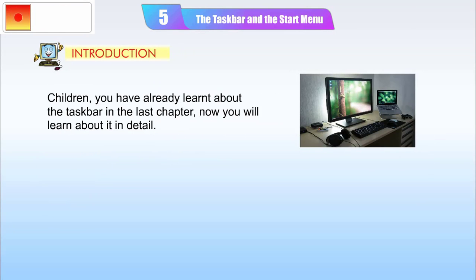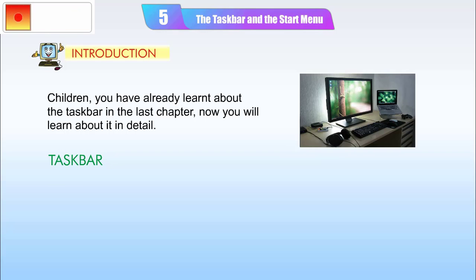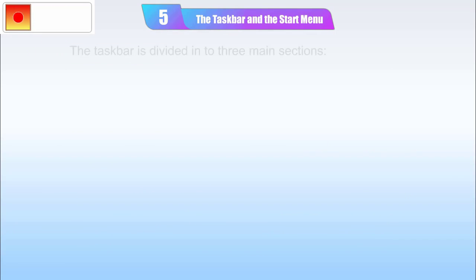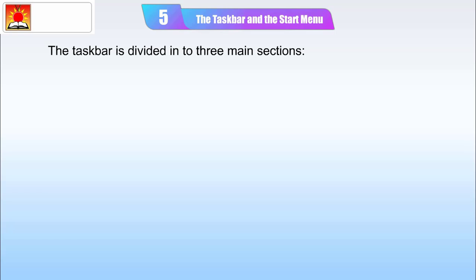Children, you have already learnt about the taskbar in the last chapter. Now you will learn about it in detail. The taskbar, figure 5.1, is the long horizontal bar present at the bottom of the screen. The taskbar is divided into three main sections.